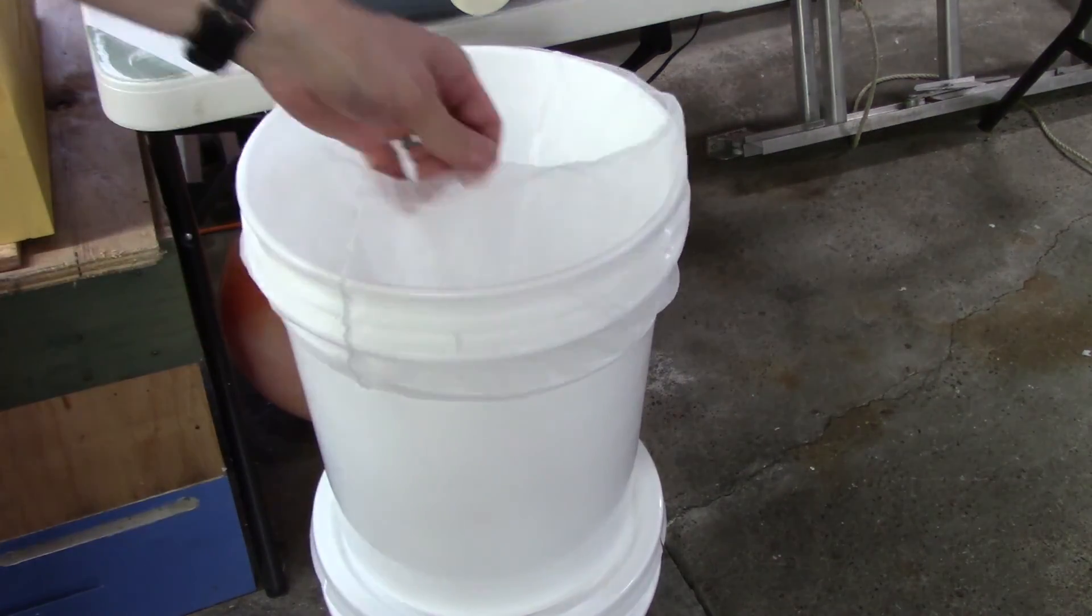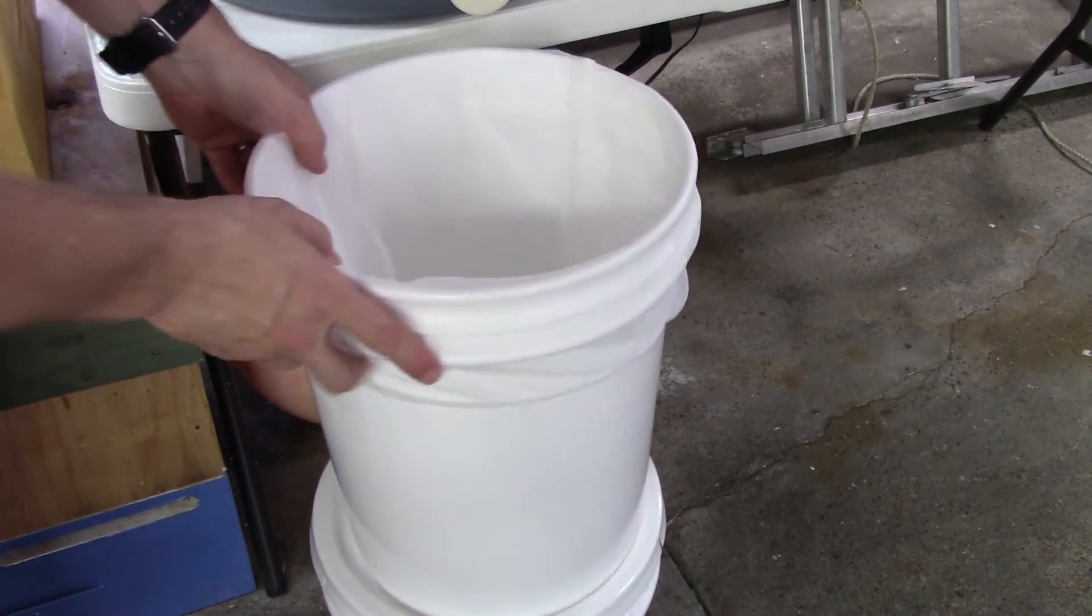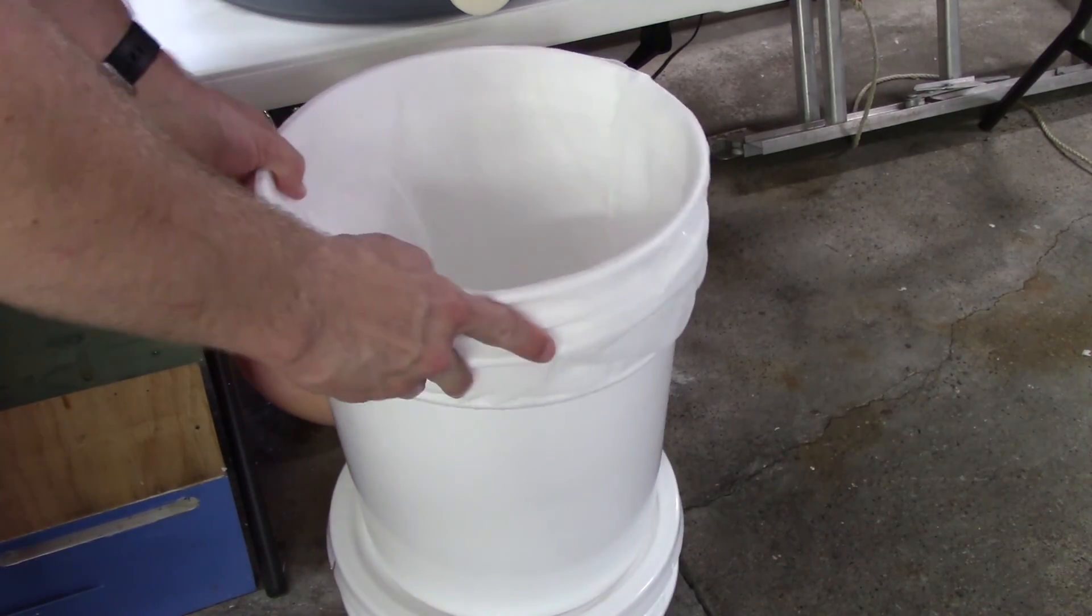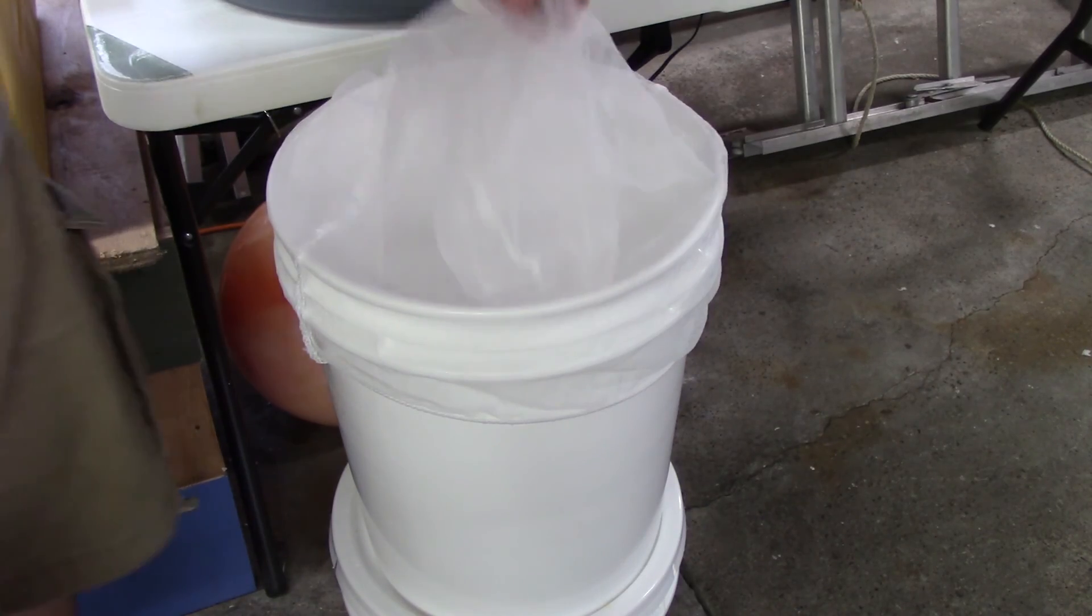And this is going to hold all my cappings and comb and kind of just strain out the honey. I love these mesh bags because when I'm done uncapping and I've got all the beeswax and comb and everything in here, if you let it sit overnight, it'll drain out nicely and most of the honey will go right through this.